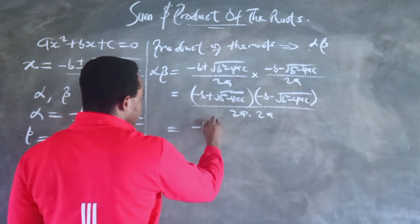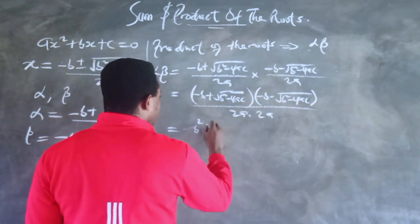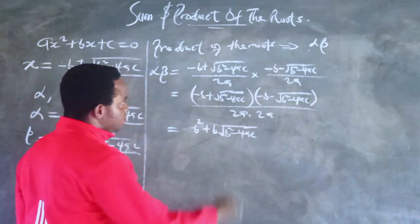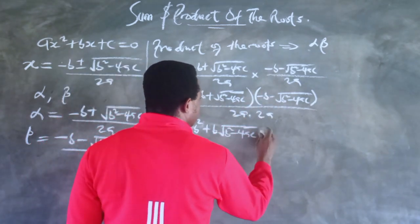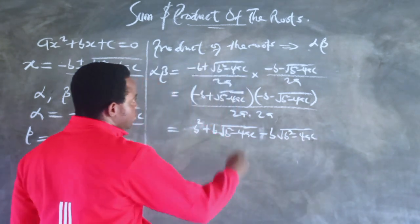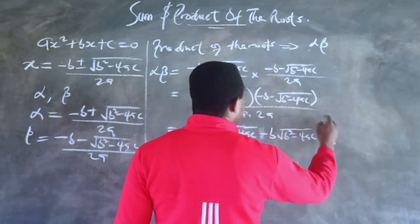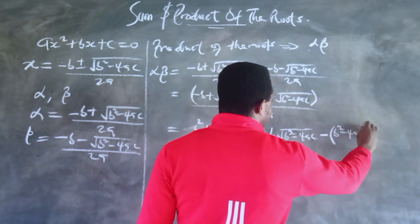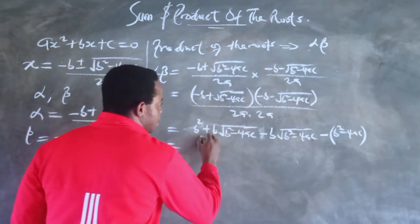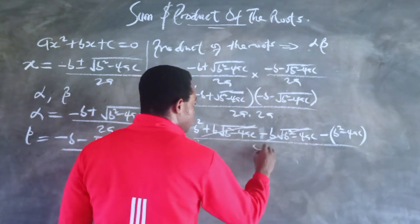Expanding the numerator: minus times minus gives +b², then minus times minus gives +b√(b² - 4ac), then plus times minus gives -b√(b² - 4ac), and finally multiplying the two square root terms removes the square root but plus times minus gives -(b² - 4ac). All of this is over 4a². The middle terms cancel, and b² and -b² cancel, leaving 4ac over 4a².